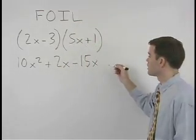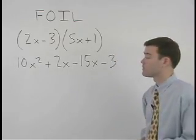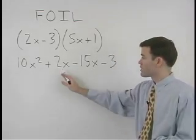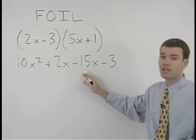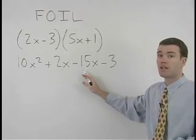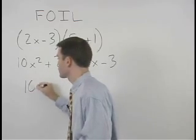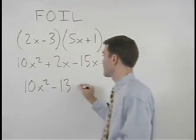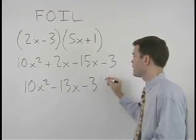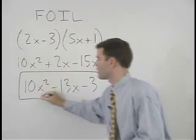positive 1 which is negative 3. Notice that positive 2x minus 15x simplifies to negative 13x so we have 10x squared minus 13x minus 3 as our final answer.